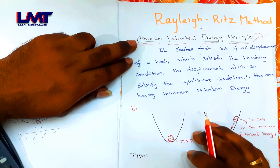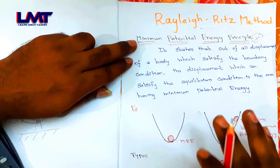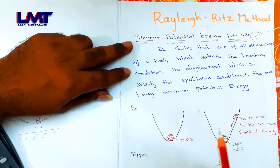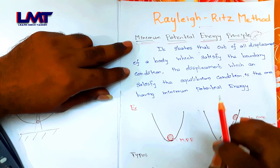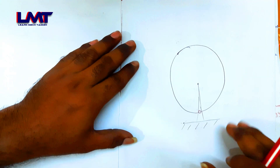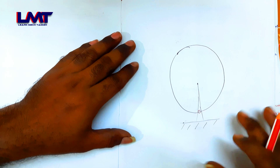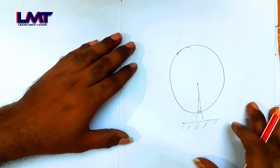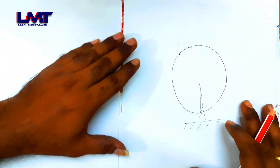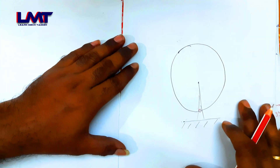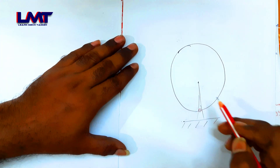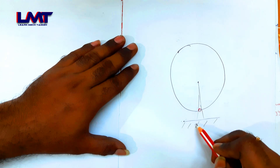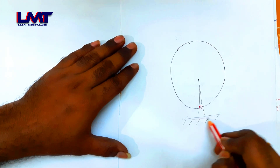What is the minimum potential energy principle? Let's give a small example. We will go with a rollercoaster to explain the energy principle. If you take a rollercoaster and start in this position — this is a small distance from the ground surface.